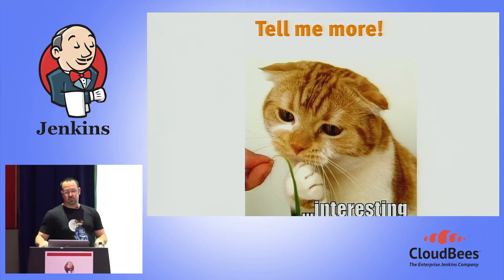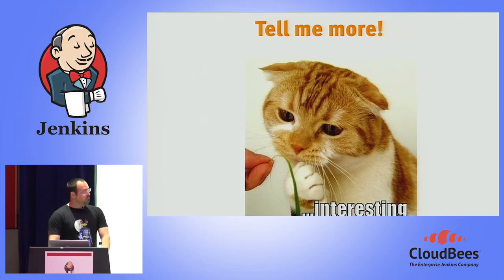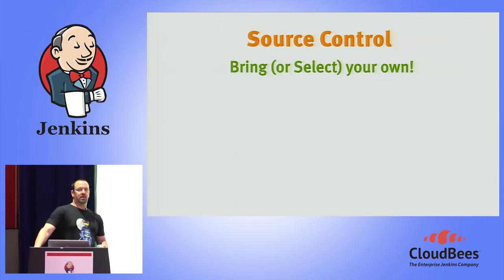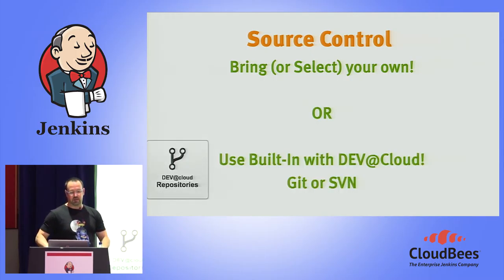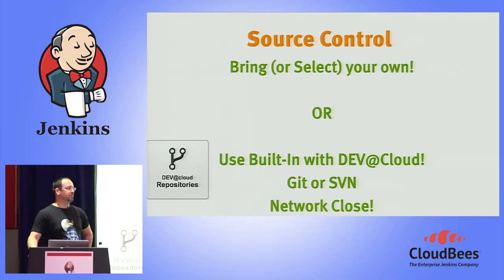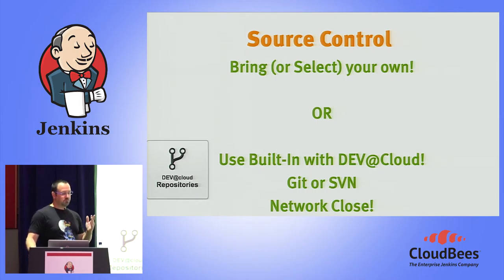Hopefully by now I've got you intrigued enough to bear with me through the technical details. Let's dive in and see what actual technical parts we're going to use to build this pipeline. First, we're going to use a source repository, a version control repository. The options are plenty — GitHub or Bitbucket, which are very popular, or the DevAt Cloud offering with Git or Subversion. One big advantage of having the DevAt Cloud close to your CI is that everything is network-close, so your build fetches the sources much more rapidly.